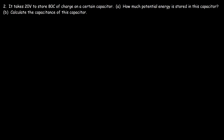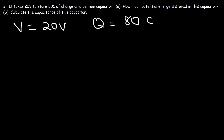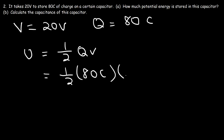Now let's move on to number two. It takes 20 volts to store 80 coulombs of charge on a certain capacitor. How much potential energy is stored in this capacitor? We have the voltage which is 20 volts and the charge is 80 coulombs. We can calculate the potential energy using the formula one-half QV.